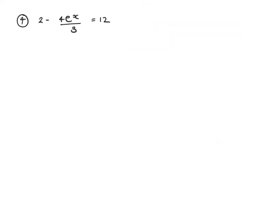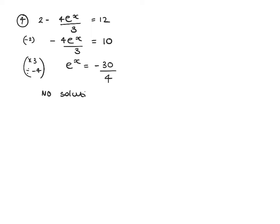For question 4, subtract 2 first: negative 4 e to the x over 3 equals 10. Multiply by 3 and divide by negative 4: e to the x equals negative 30 over 4. Then we hit a problem — taking ln of a negative number gives an error on the calculator. This equation has no real solutions.